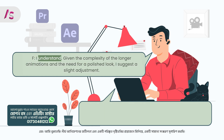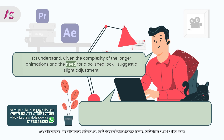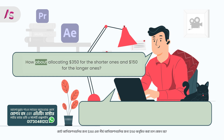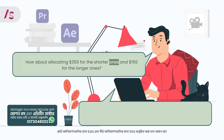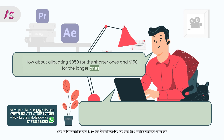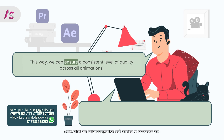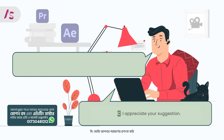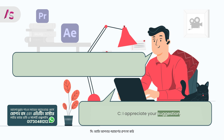I understand. Given the complexity of the longer animations and the need for a polished look, I suggest a slight adjustment. How about allocating $350 for the shorter ones and $150 for the longer ones? This way we can ensure a consistent level of quality across all animations. I appreciate your suggestion — let's go with that budget distribution.